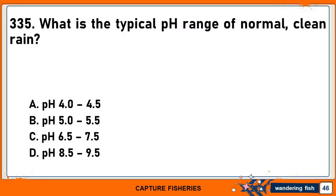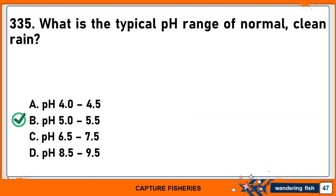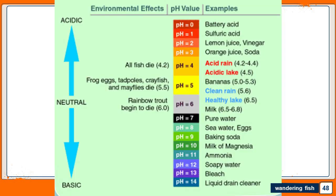What is the typical pH range of normal, clean rain? A. pH 4.0 to 4.5. B. pH 5.0 to 5.5. C. pH 6.5 to 7.5. And D. pH 8.5 to 9.5. The correct answer is B. pH 5.0 to 5.5. Acid rain, or acid deposition, is a broad term that includes any form of precipitation with acidic components, such as sulfuric or nitric acid, that fall to the ground in wet or dry forms — including rain, snow, fog, hail, or even acidic dust. Acid rain has a typical pH range of 4.2 to 4.4.